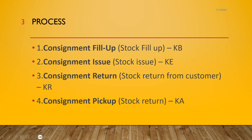There are four processes involved here: consignment fill-up, consignment issue, consignment return, and consignment pickup. KP, KE, KR, and KA are all document types — sales document types.